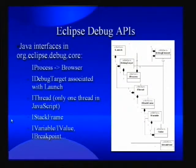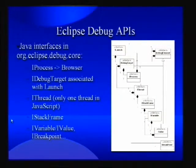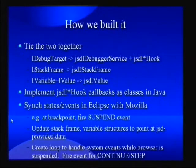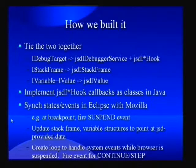On the Eclipse side: IProcess gets tied to the browser. IDebug Target is primarily a container for threads — there's only one thread in JavaScript. Debug target is where you set your breakpoints, and thread is where you keep state, handle suspend, step, and things like that. Those two classes kind of correspond to Debugging Service from JSD. Stack Frame and Variable obviously correlate to the other JSD interfaces. We pretty much just tied the two together — we implemented those interfaces, and each implementation contains a reference to one of those JSD classes, calling through the bridge.